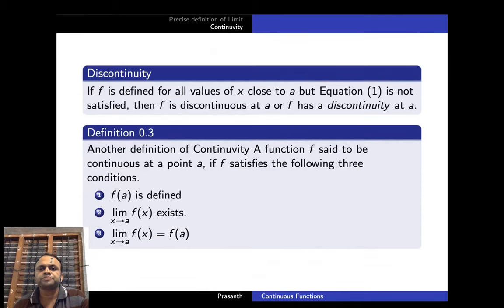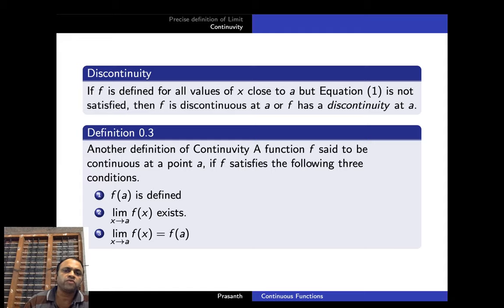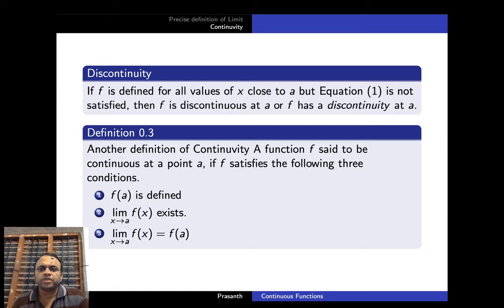This is what we mean by proximity. Now what do we mean by discontinuity? If f is defined for all values of x close to a but the equation limit x→a f(x) = f(a) is not satisfied, then f is discontinuous at a, or f has a discontinuity at a. That means limit x→a f(x) need not equal f(a).